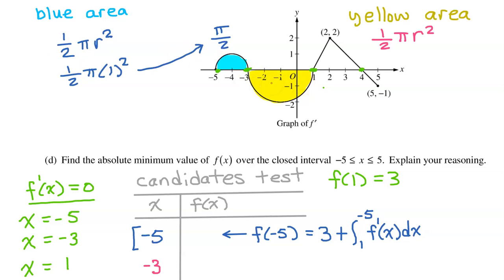How about the yellow area? The radius is 2, so the area of the semicircle will be 1 half pi times 2 squared. In other words, 1 half pi times 4. 1 half of 4 is 2, so this will be 2 pi.